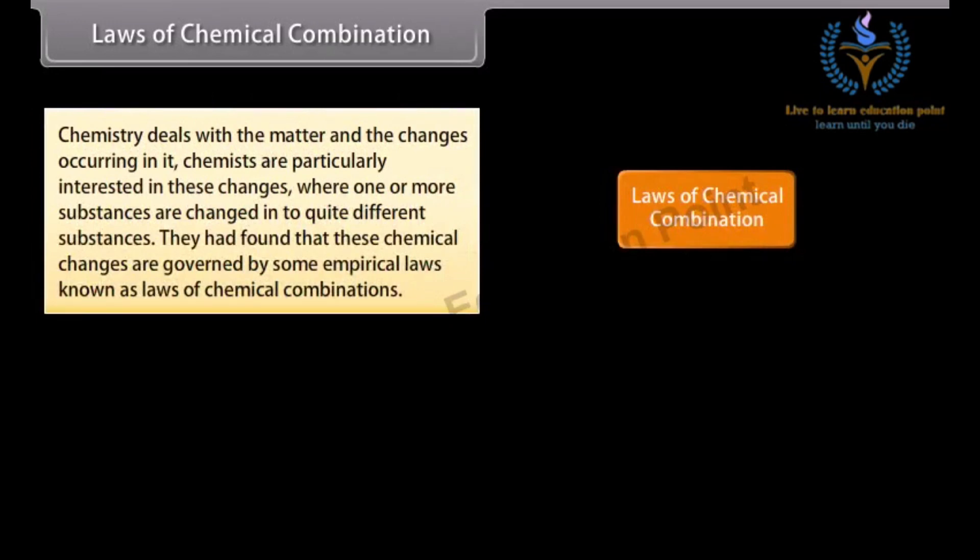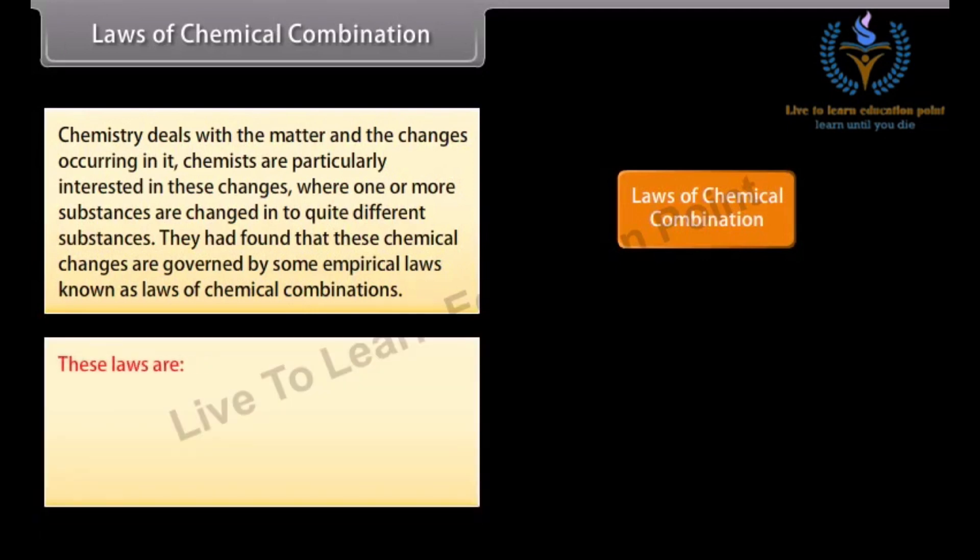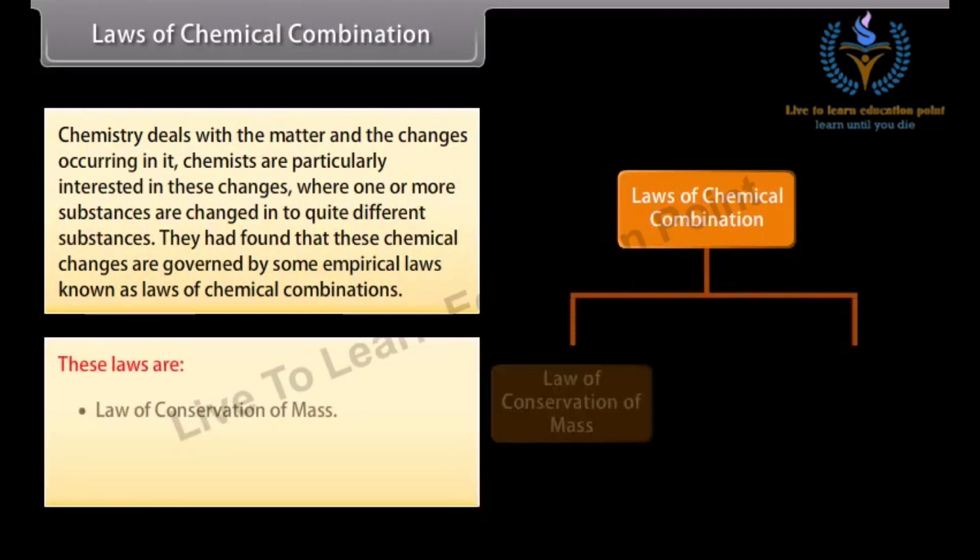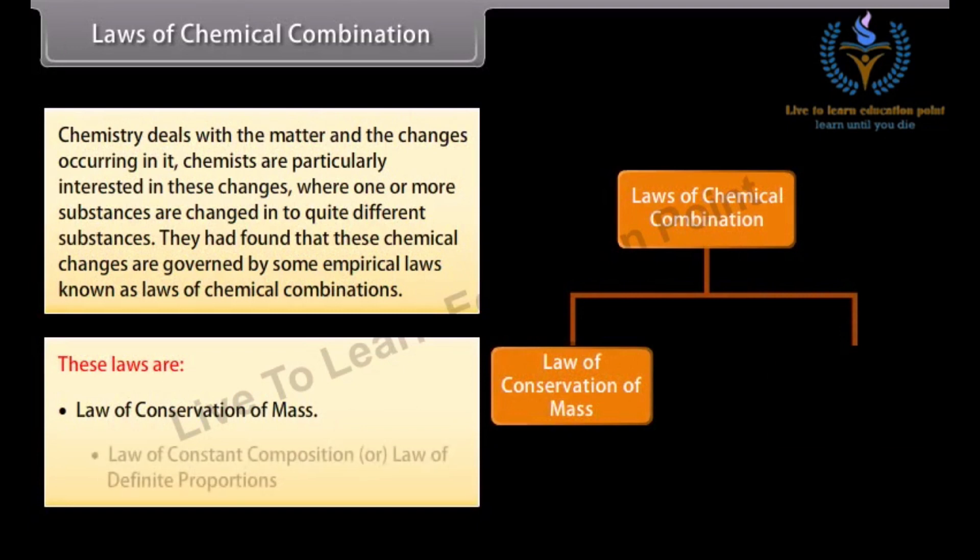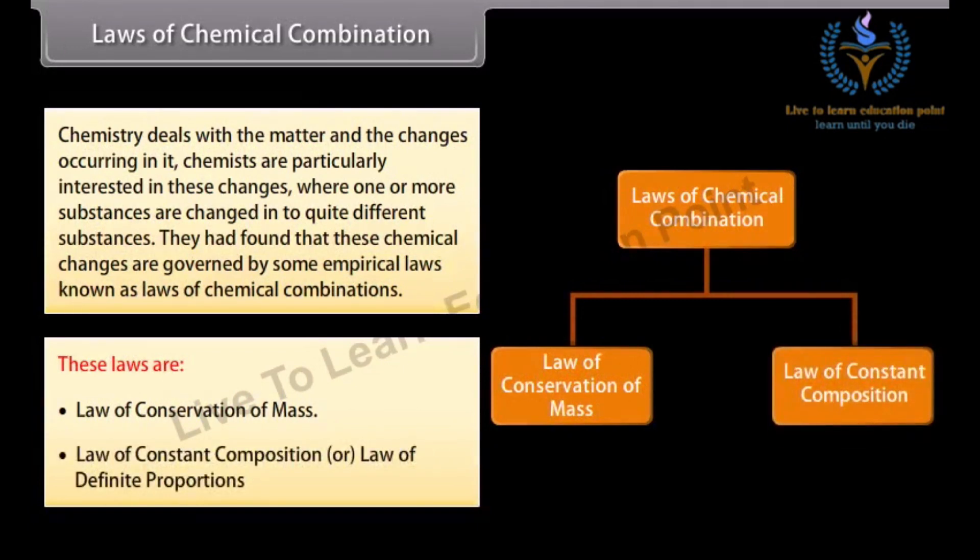Laws of chemical combination. Chemistry deals with the matter and the changes occurring in it. Chemists are particularly interested in these changes where one or more substances are changed into quite different substances. They had found that these chemical changes are governed by some empirical laws known as laws of chemical combinations. These laws are law of conservation of mass and law of constant composition or law of definite proportion.